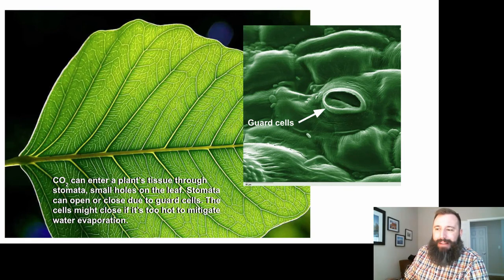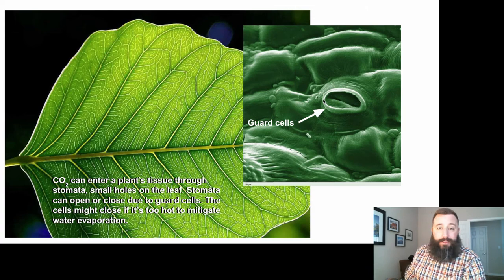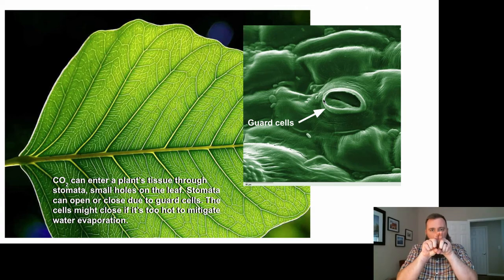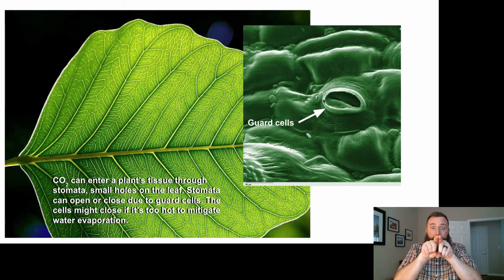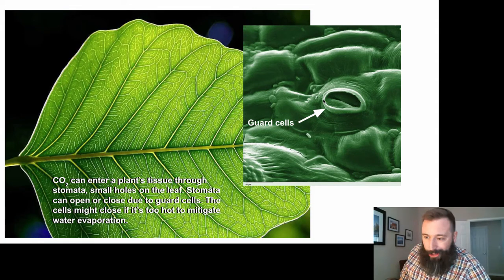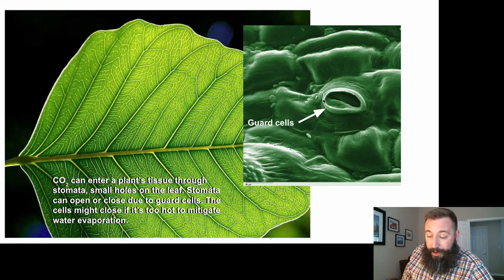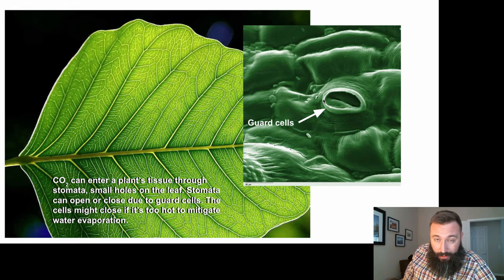these guard cells will form the borders of a pore or a hole that carbon dioxide can enter into. These pores are called stomata. These holes in the bottom of the leaves are guarded by these guard cells. These guard cells will either swell up with water and open, or shrink when they have less water. When they shrink, they close, not allowing carbon dioxide to enter into the leaf. When they're swollen, they're able to open up. When water is present, photosynthesis can occur, so carbon dioxide is absolutely required.